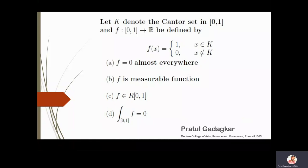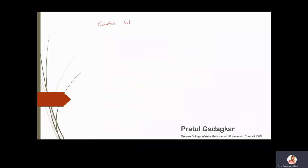In this problem, K is the Cantor set in the closed interval [0,1], and f is a function defined on the closed interval [0,1] such that f is 1 on the Cantor set and 0 on the complement of the Cantor set. We have to check which options are correct. The Cantor set K has measure 0 — this is one of its important properties.